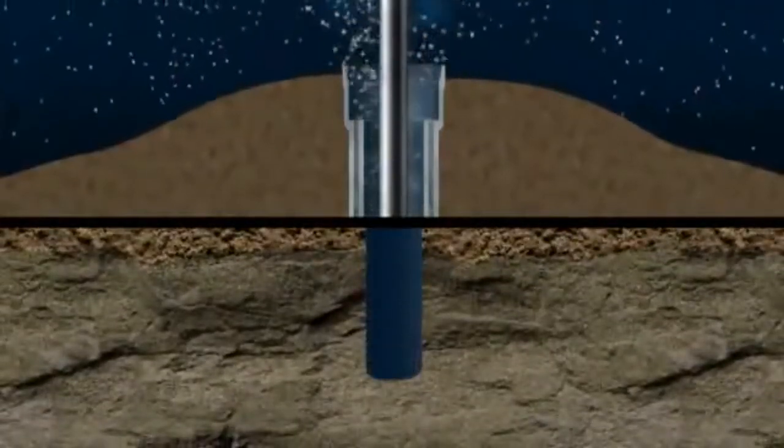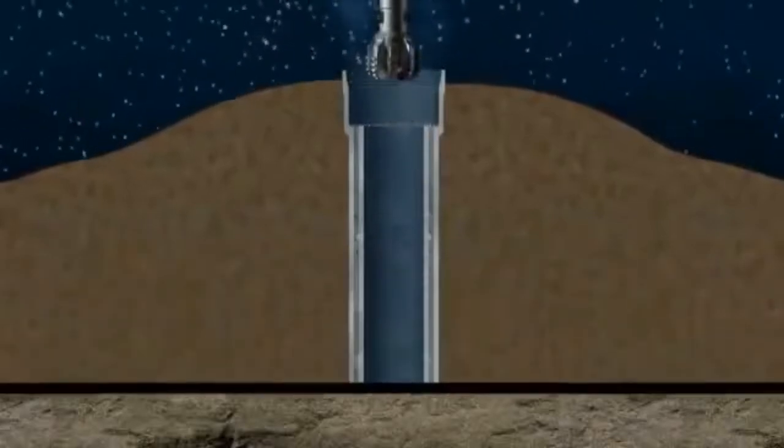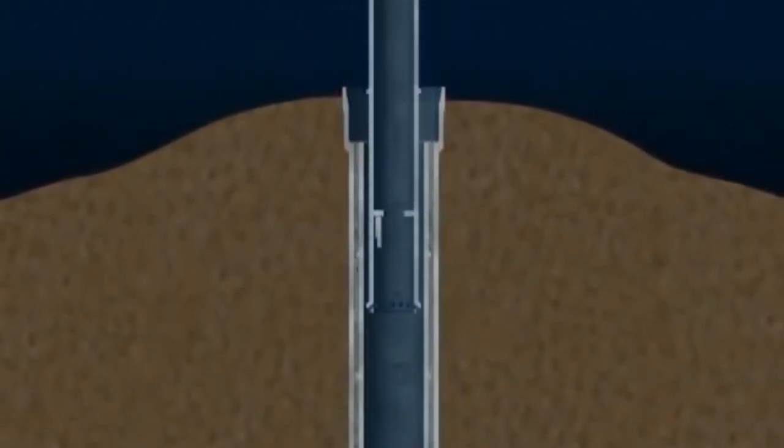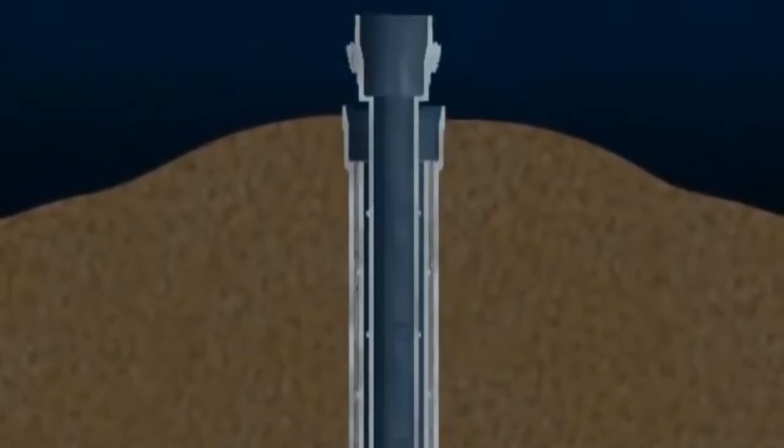Then steel tubing, known as casing, is lowered into the hole and cemented in place. This first casing run has an attached wellhead.